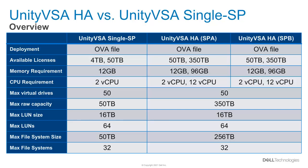In terms of system limits, a majority of the same limits are applicable to both solutions except for the 350TB licenses which have a higher capacity limit. For example, the max LUN size is 16TB, the max number of LUNs is 64TB, and the max number of file systems is 32TB for both types of solutions. But the max raw capacity can scale up to 350TB only on the Dual SP version.